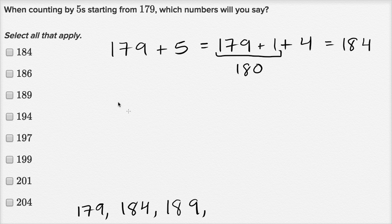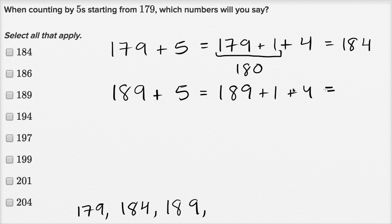Now if we add 5 again, we're going to do just what we had over here. 189 plus 5, that's the same thing as 189 plus 1 plus 4. 189 plus 1 is 190, plus 4 is 194. So this is going to be 194.